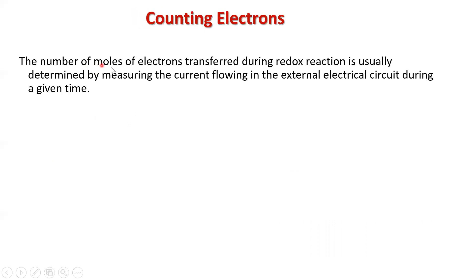So the number of moles of electrons transferred during a redox reaction is determined by the flow of electrons in that external circuit. So a couple of equations. Charge equals current times time. Current is I, time is T, charge is Q.